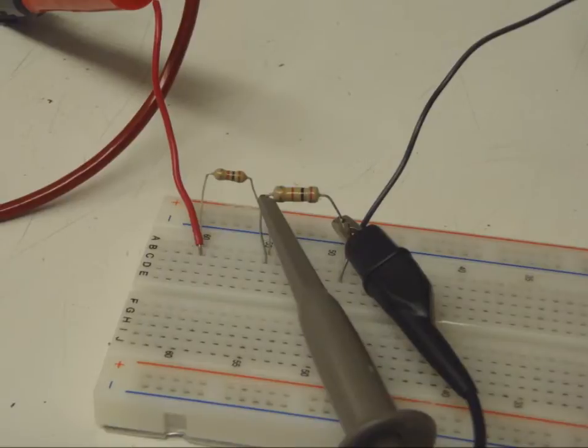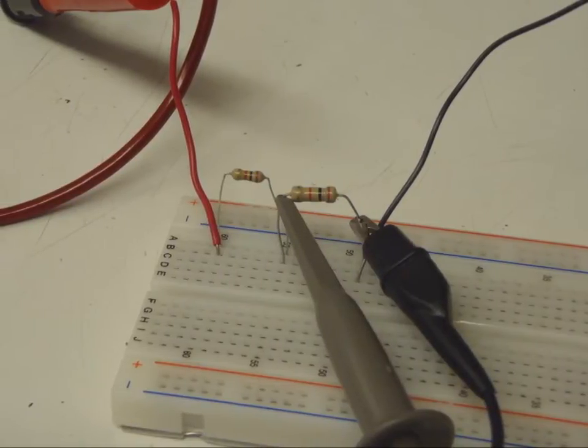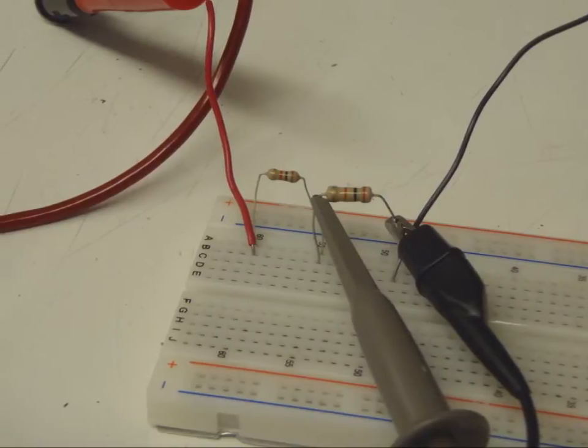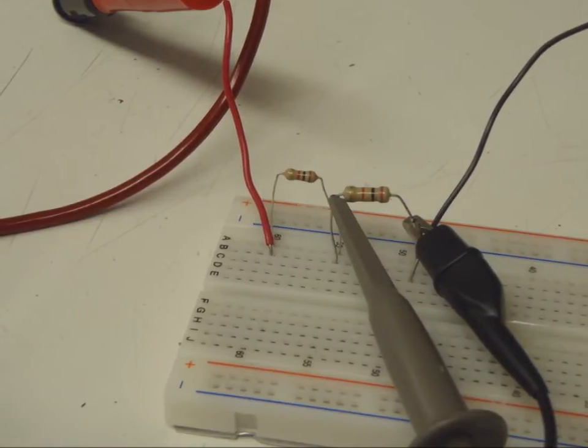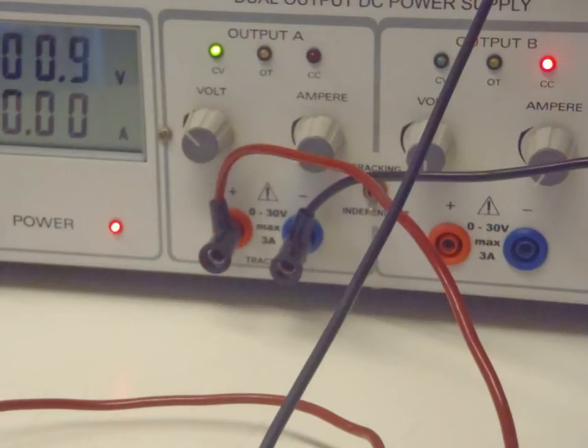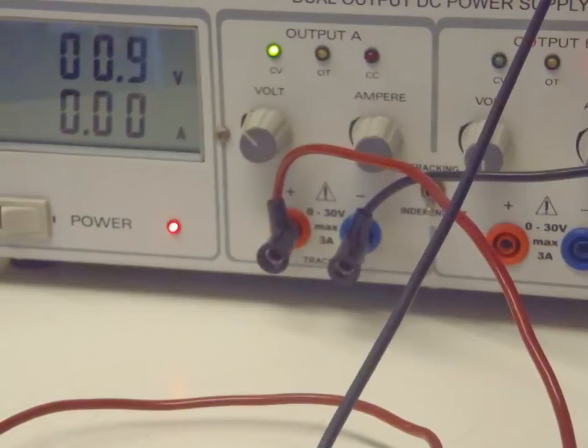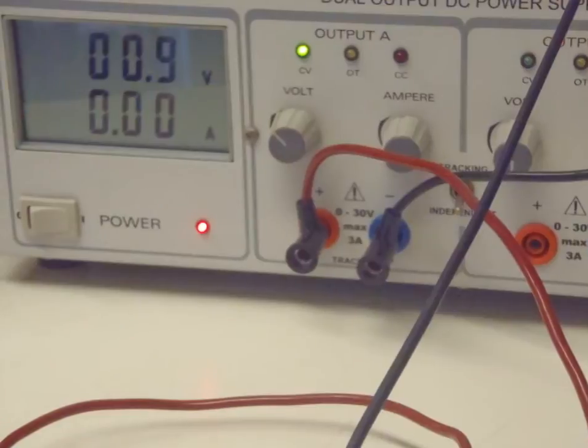Now this is our Thevenin's equivalent circuit. We have our Thevenin's resistance, which is one kilo ohm, which is the resistor on the far left. And we have our RL, which is our actual resistor of the load. Now I actually set up the voltage using the oscilloscope. So even though it says 0.9 going into the circuit, it's actually one volt.